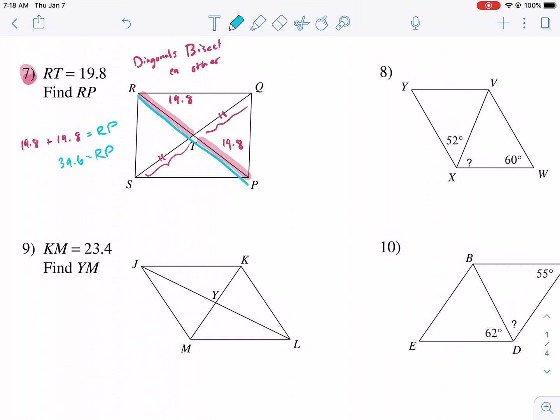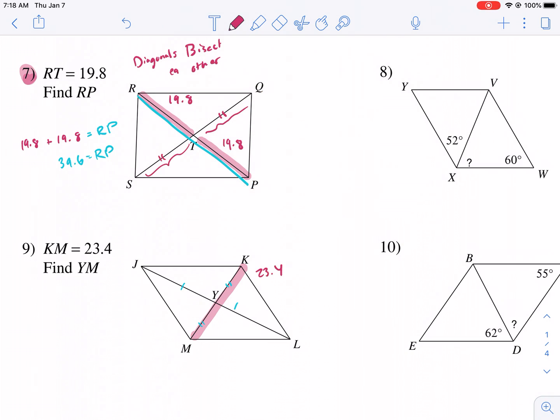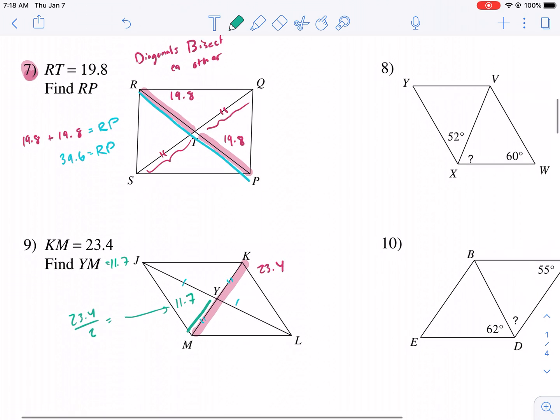Now another thing, this is kind of like the reverse. If we know that diagonals bisect each other, we know these are equal, these are equal. So if we're given KM, this whole distance here is 23.4, then we just simply have to divide that by two to find the mid-segment or half of that diagonal. So that's going to be YM. So YM is half that. So that's going to be half of 23.4. So we do 23.4 divided by two, and that gives us 11.7 for YM.